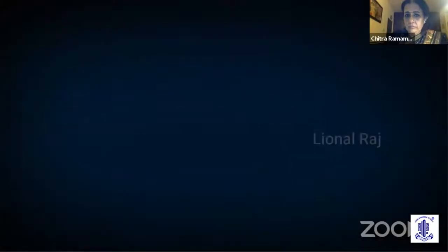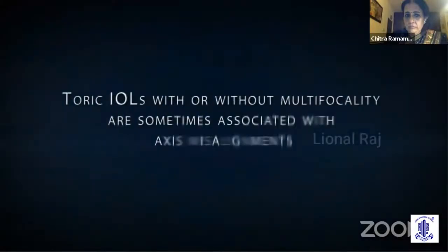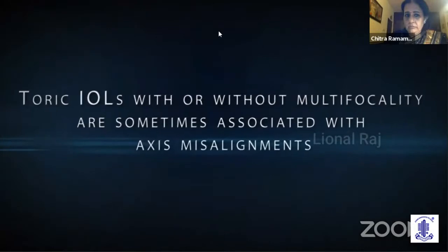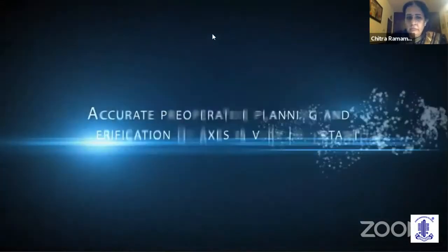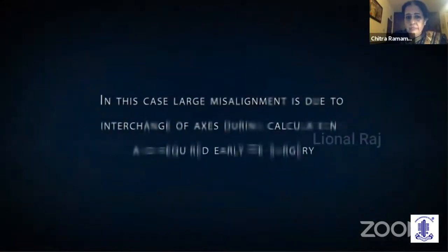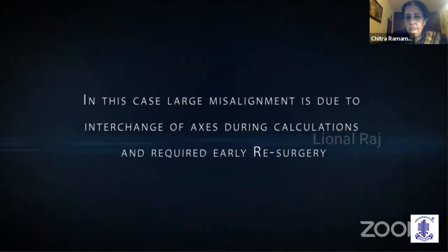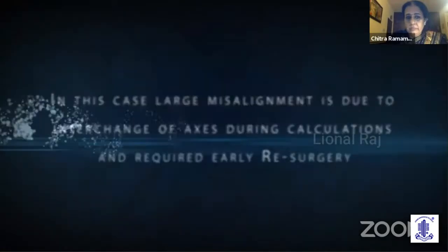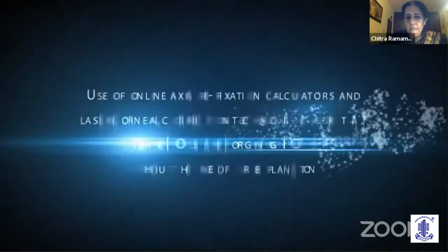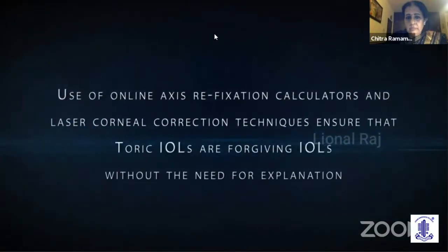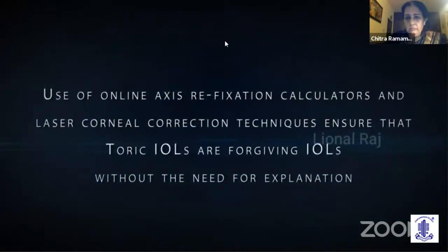To conclude, toric IOLs with or without multifocality are sometimes associated with misalignments. Accurate planning and verification of axes are very important. Interchanged axes was a blunder in our case and required early re-surgery. Use of online refixation calculators ensures toric IOLs are forgiving lenses and not necessary to be exchanged.